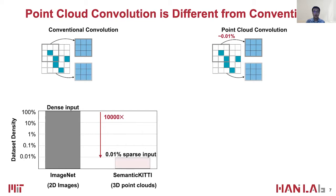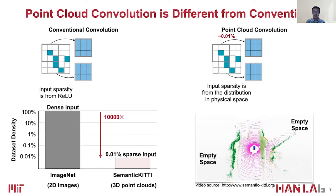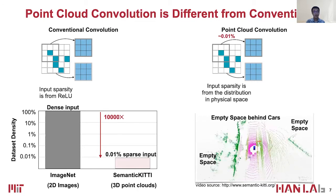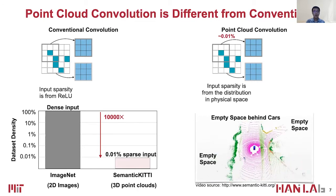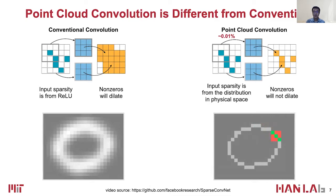Unlike conventional convolution, whose input sparsity results from the ReLU activation function, the sparsity in point cloud convolution comes from the distribution of points in the physical space, which contains real-world information. Therefore, it places hard constraints on the sparsity pattern. In other words, the non-zeros will not dilate during the computation, which leads to a different computation pattern.